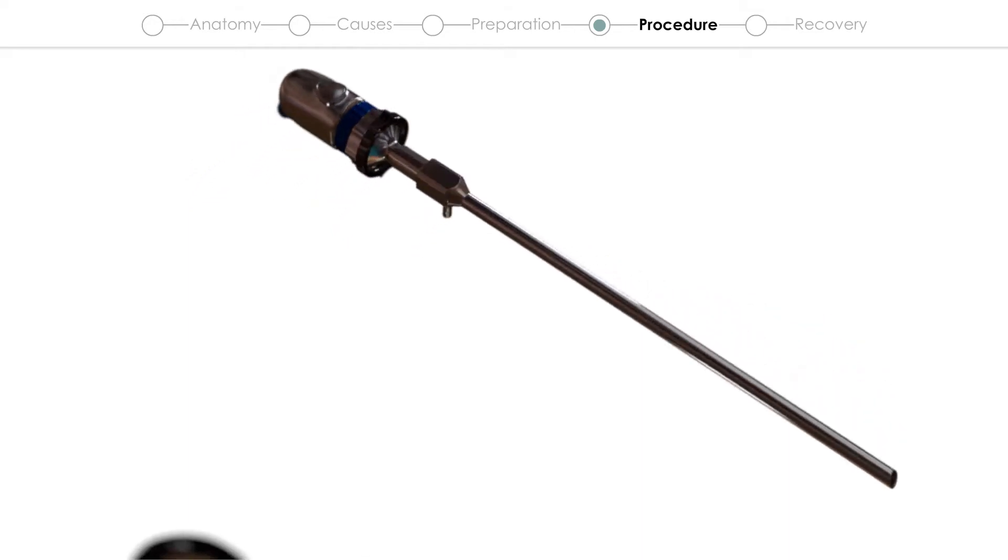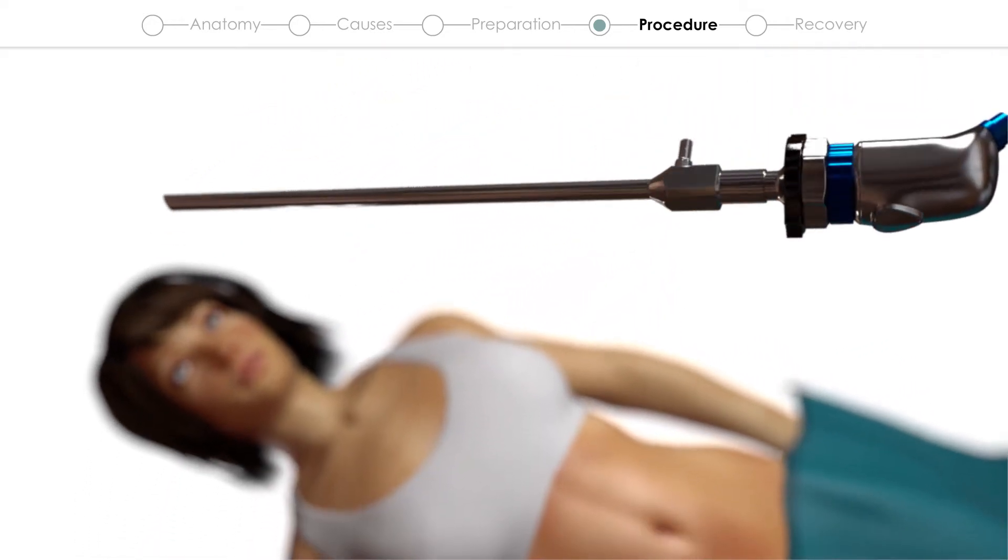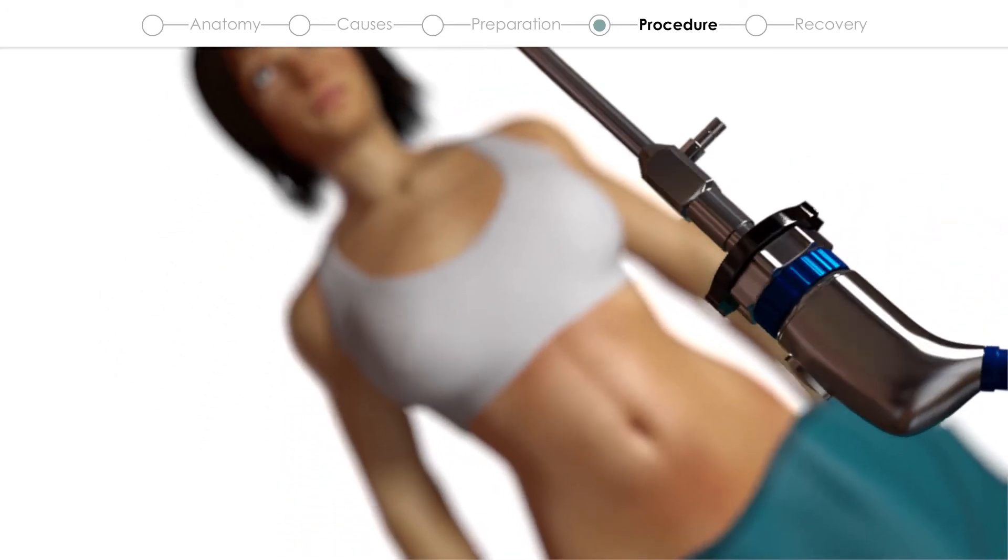The operation can be performed in one of two ways, either through keyhole surgery with the help of an instrument called a laparoscope, which allows the surgeon to see inside the abdomen with a tiny camera.